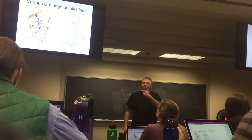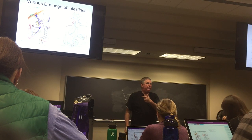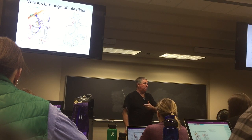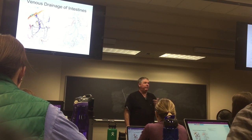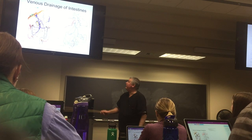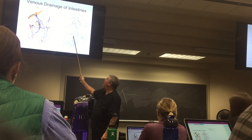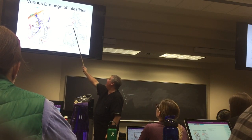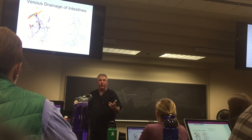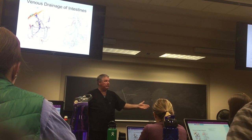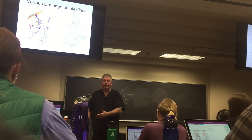This is called portal blood — it's in the portal vein, so it's called portal blood. If the venous blood is in the inferior vena cava, it's called caval blood. So you've got a portal system and you have a caval system.